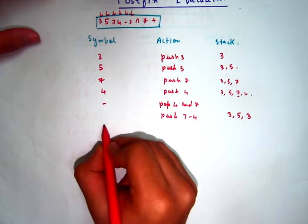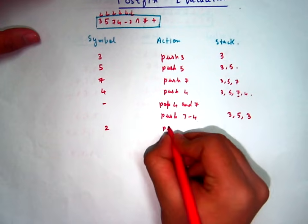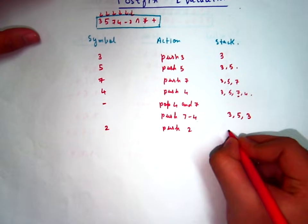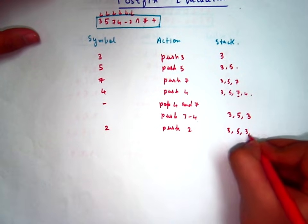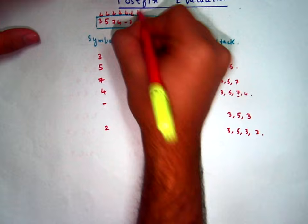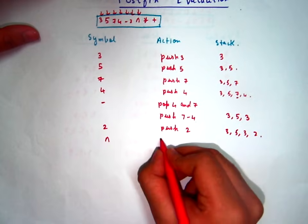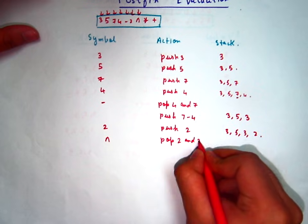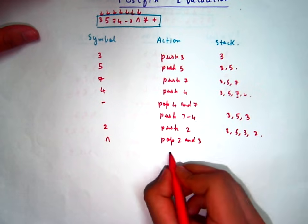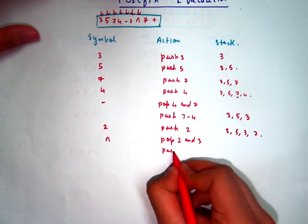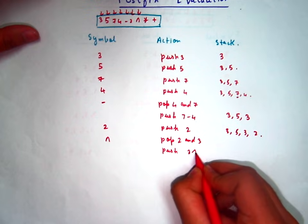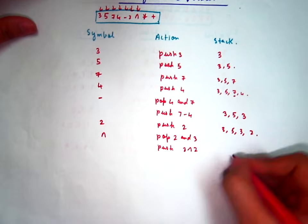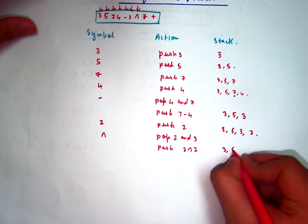Then next comes 2. Push 2. 3, 5, 3, 2. Then comes the exponent operator. What you have to do now is pop 2 and 3 from the stack. Okay, then push 3 to the power 2, that is 9. 3, 5, 9.